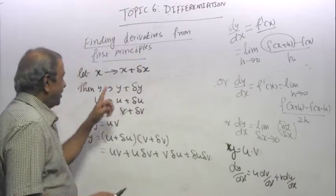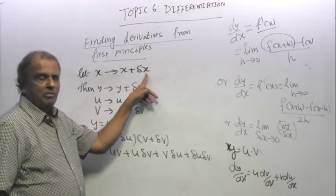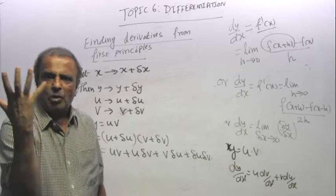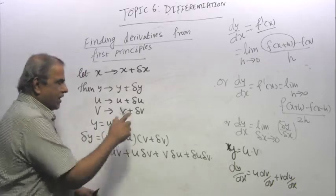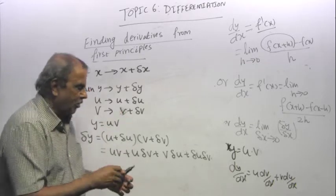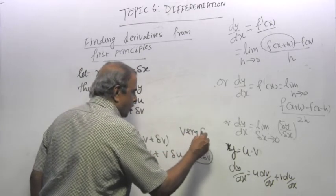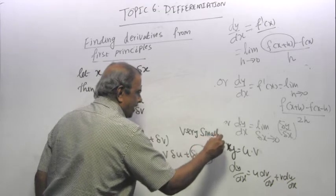If that is the case, change in x is very, very small. Change in u is very, very, very small. Change in v is also very, very small. So the product delta u delta v is very small, so you can ignore it.